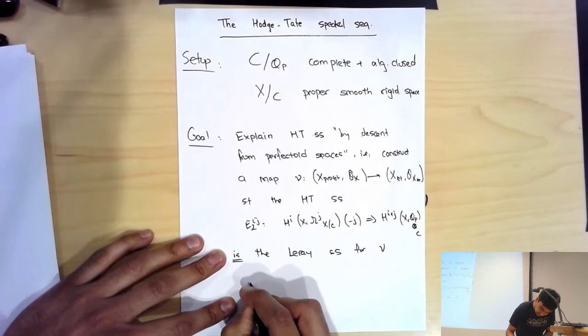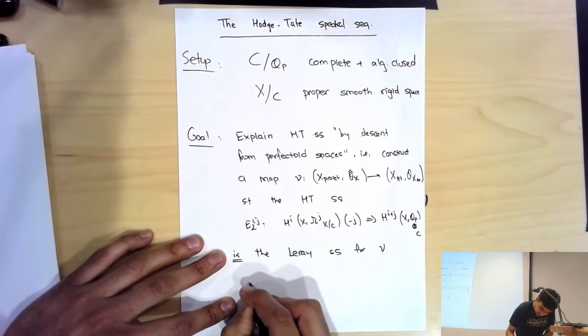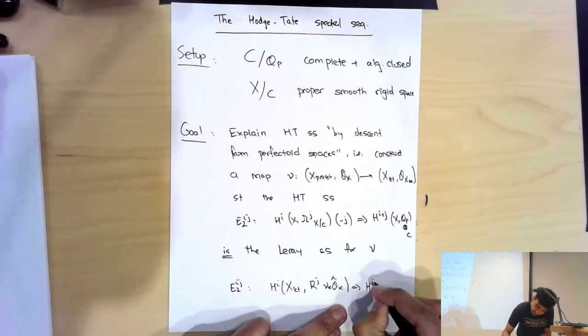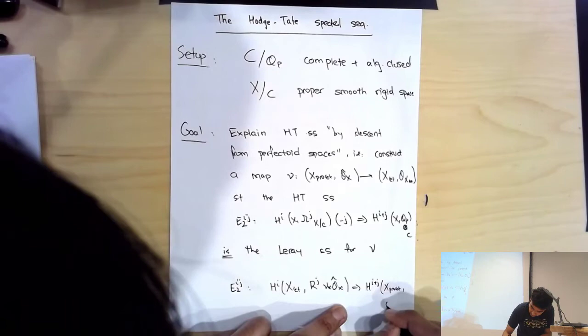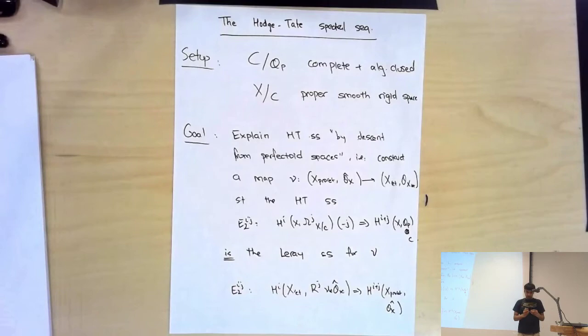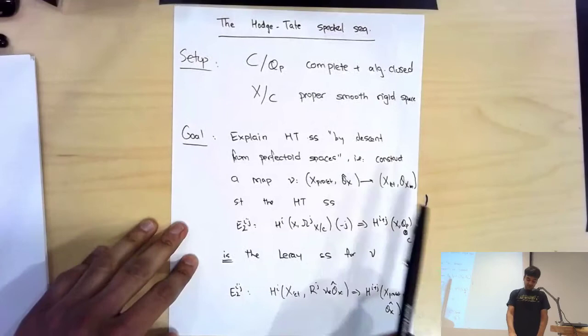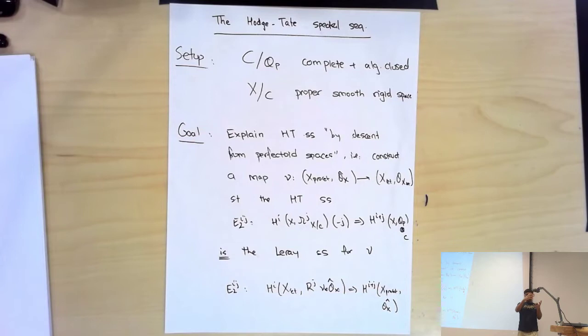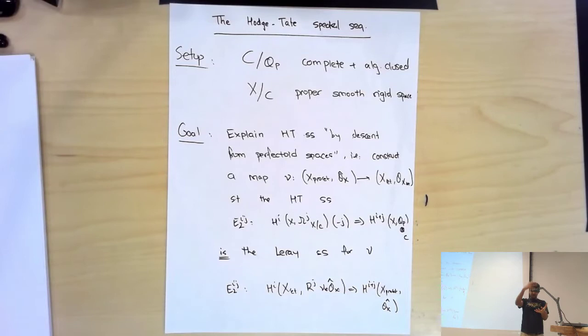This is the spectral sequence you get from a composition of derived functors: H^i downstairs of the j-th pushforward from upstairs is supposed to converge to the cohomology upstairs of Ô_X. So what I need to explain is: first, what is X_{pro-ét} and what is the sheaf Ô_X on it. Once I have explained that, there are two statements: why is the sheaf of differential forms given by the j-th pushforward ν_* Ô_X, and why is the cohomology of the structure sheaf Ô_X on the pro-étale site actually just the étale cohomology we were interested in.